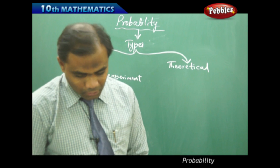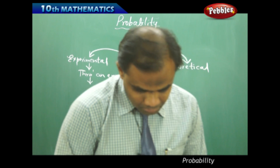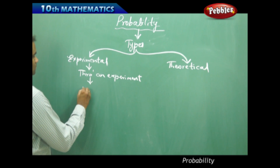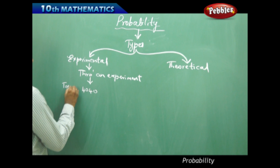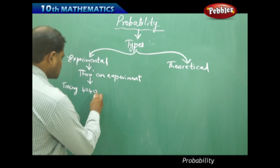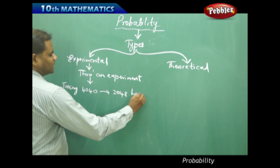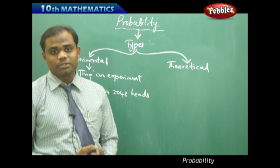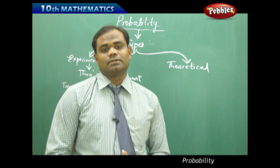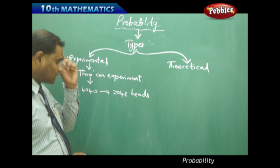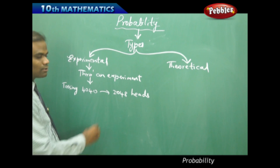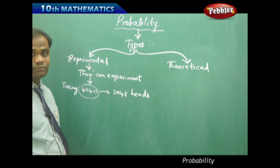For example, the French mathematician Buffon tossed a coin 4040 times and got 2048 heads. This is purely experimental probability because an actual experiment was conducted. When counted, he got 2048 heads out of 4040 tosses, and the rest were tails.